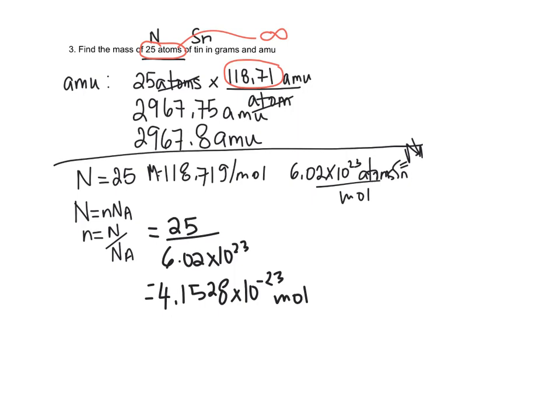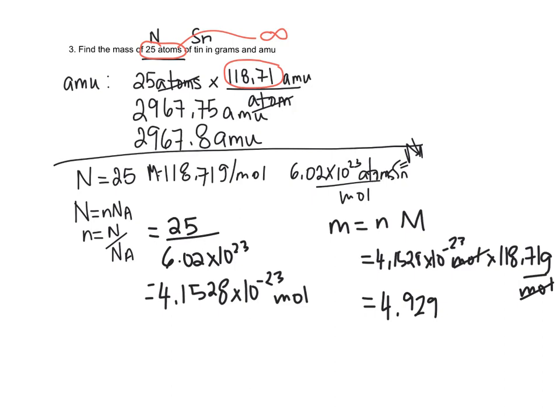Now that we have the number of moles, we can solve for mass. So 4.1528 times 10 to the negative 23 moles times 118.71 grams per mole. The answer is 4.9298 times 10 to the negative 21 grams. Does that make sense? Should it be very light? Because that's what the number is indicating. 25 atoms, you can't even see 25 atoms, they're so small. So you should get an extremely small mass. And we do, about 5 times 10 to the negative 21 grams.